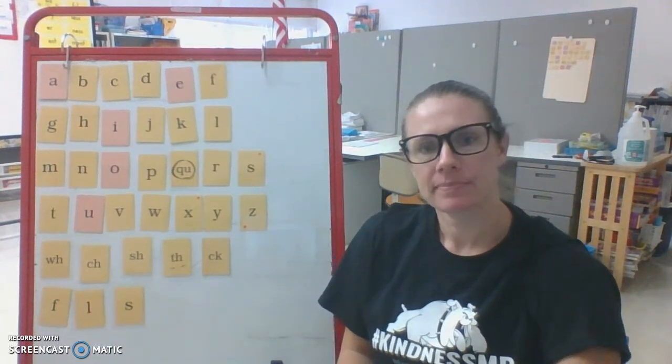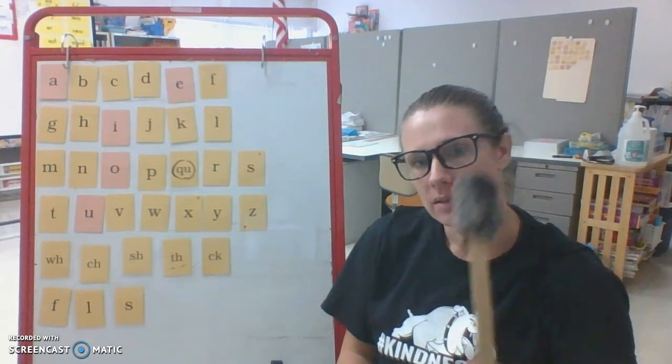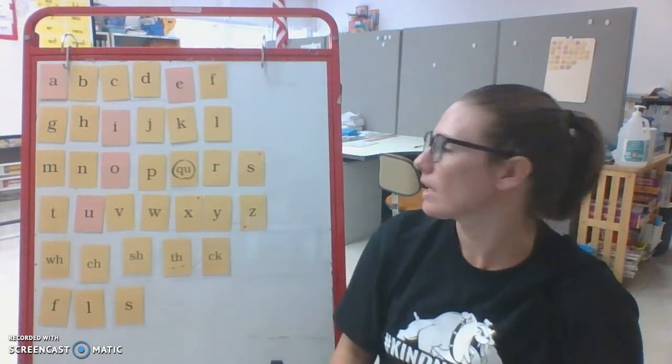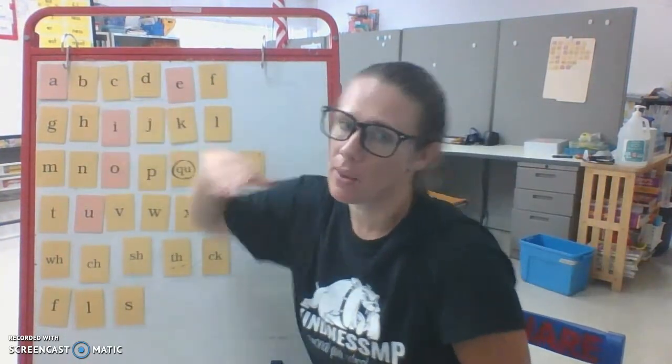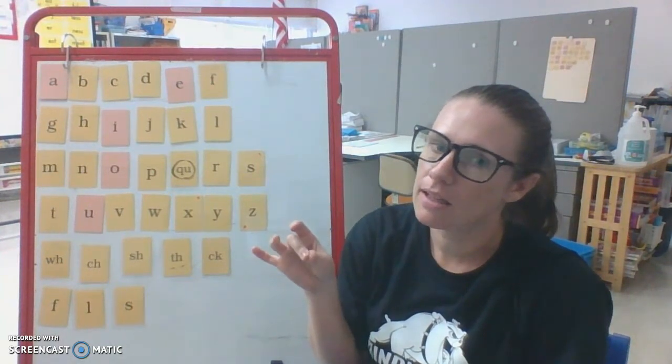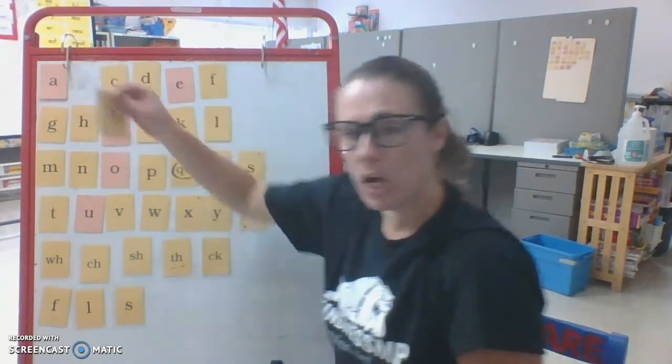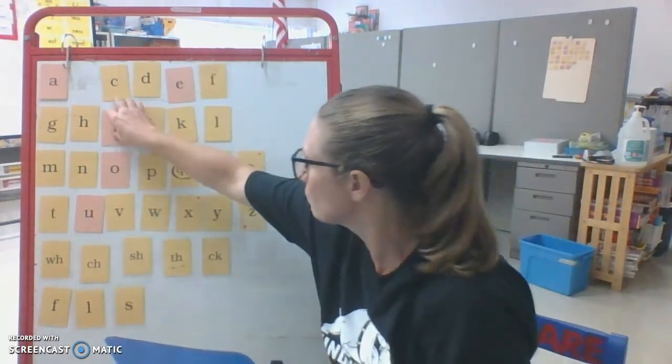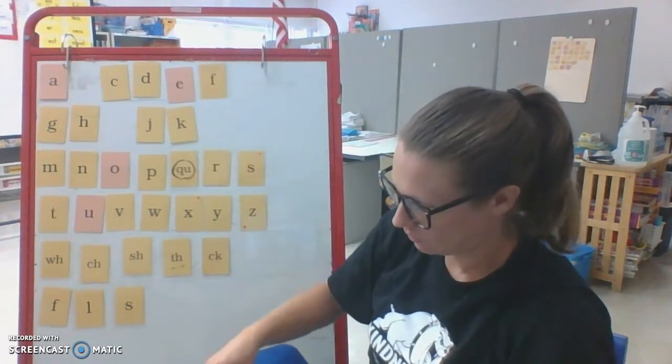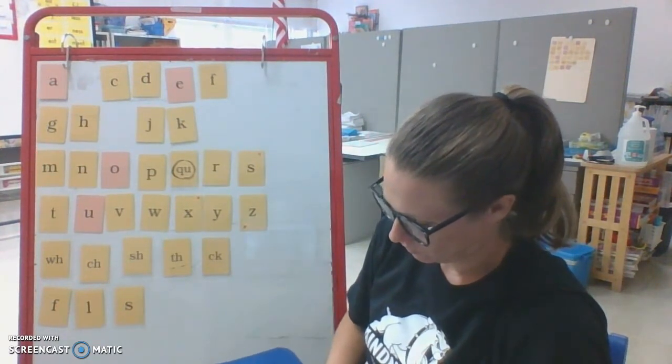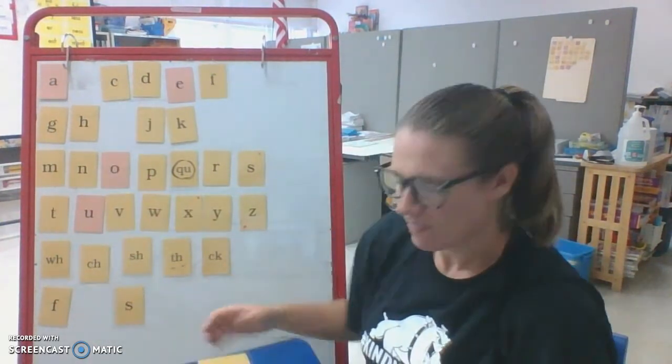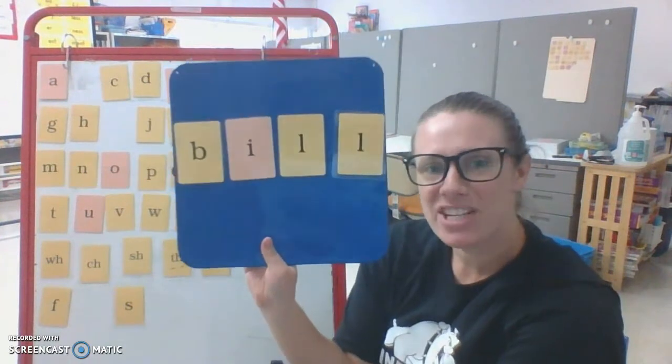Bill. Repeat after me. Bill. Let's tap it. B, I, L. Let's build it. Let's spell it out loud first, actually. B, I, L, L. Here we go. Do it on your board as best you can. When you finish, check it to mine.